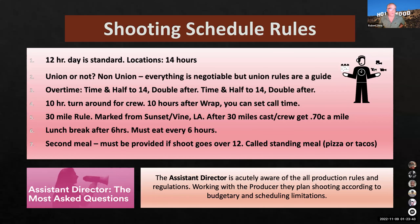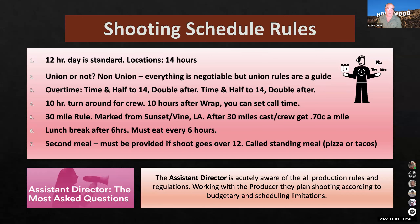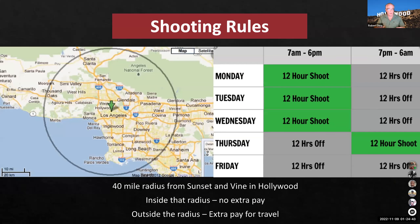Shooting schedule rules: a 12-hour day is standard; on location it's 14 hours. Overtime is time and a half to 14 hours, double time after. Sometimes shooting days go 16 to 18 hours. Crews are given a 10-hour turnaround — 10 hours from wrap before they can be called back. Lunch break is required after six hours. There's also the 30-mile rule: if you're outside a 30-mile circle from the studio zone, you must pay crew extra. The assistant director is acutely aware of all production rules and regulations.